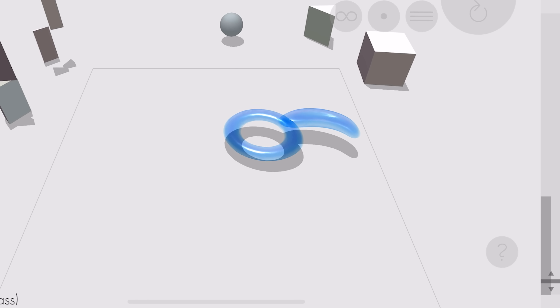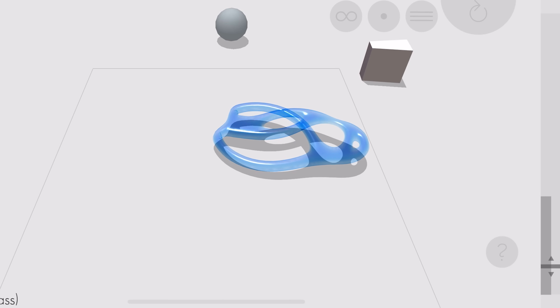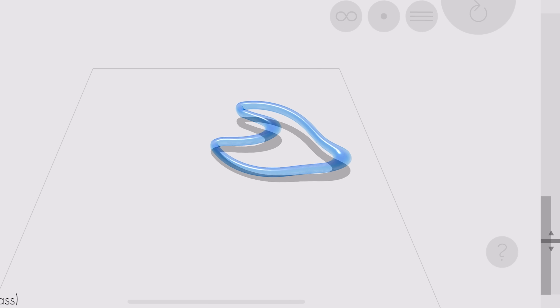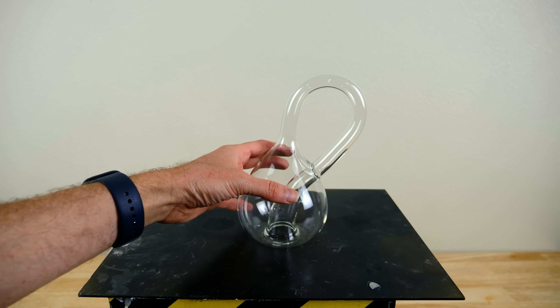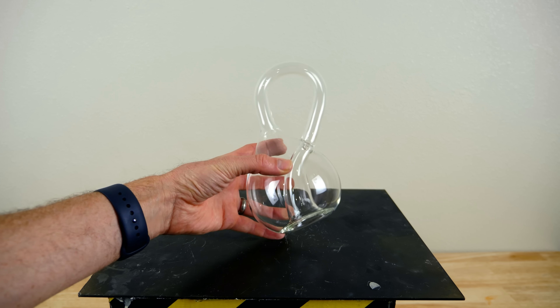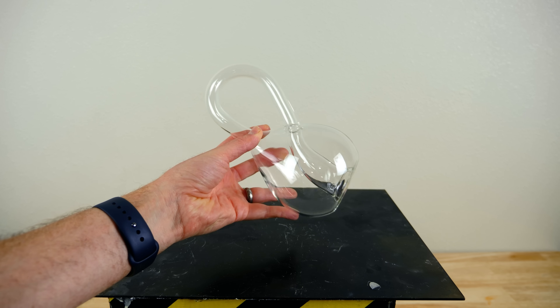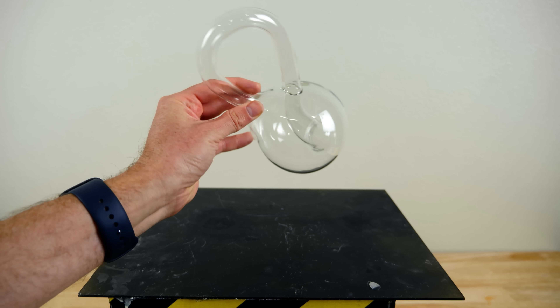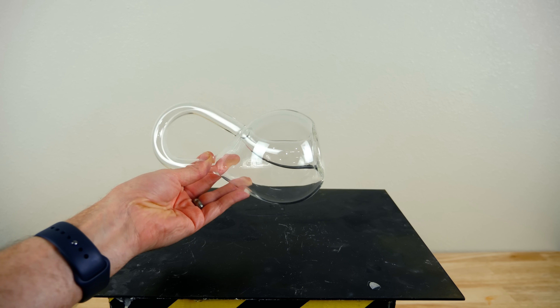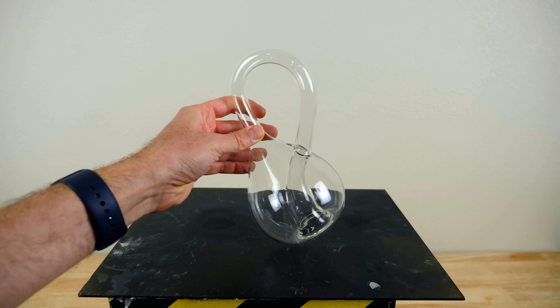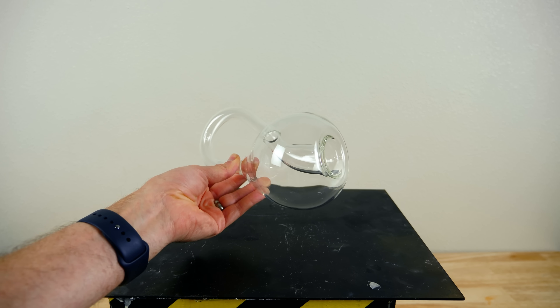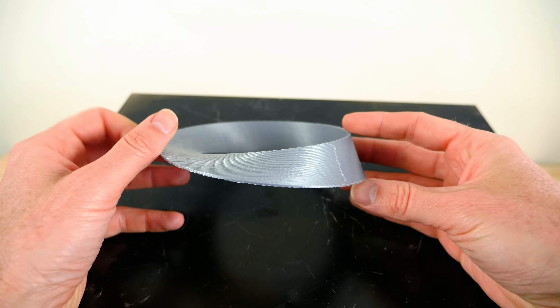Hey everyone, today I'm going to be showing you what a real 4D Klein bottle looks like. I have here a Klein bottle in three dimensions. Klein bottles are really neat because supposedly they have no volume.